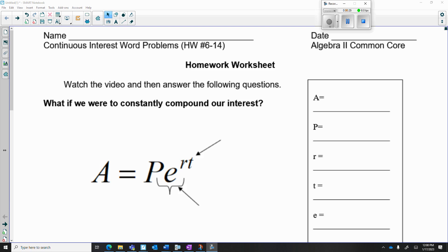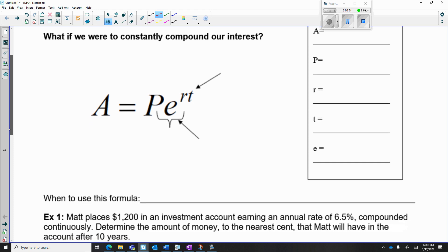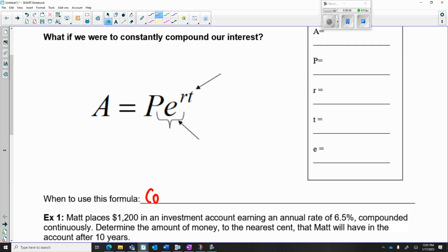...be compounded monthly, or basically it can be compounded continuously. Continuously basically means they're taking the interest rate and continually or infinitely compounding the interest over and over again, an infinite amount of times. Now if you see the keyword compounded continuously, which is down here, we're going to write it on this line.